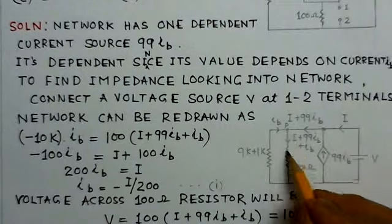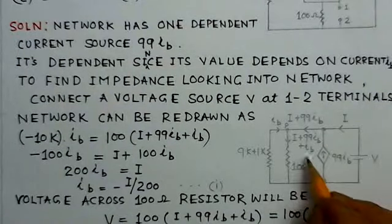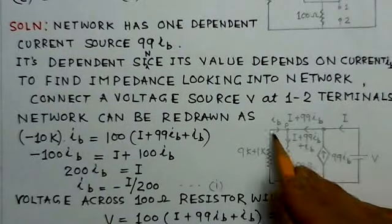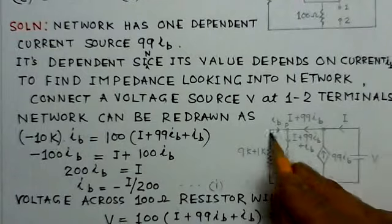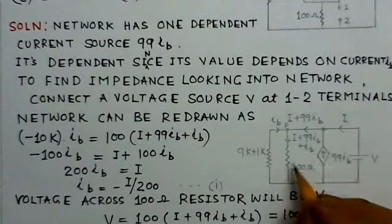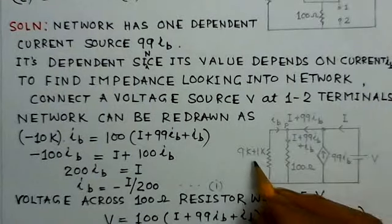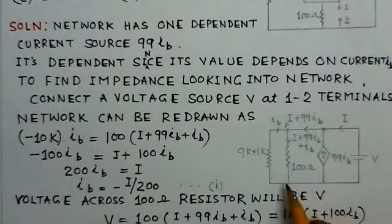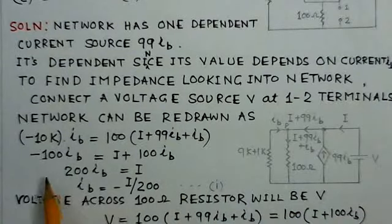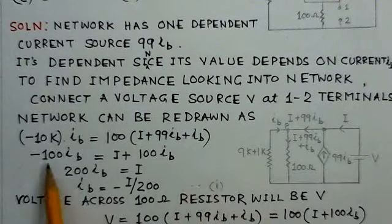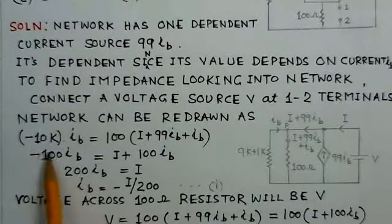If you see the current into the 100 ohm resistor, this current would be I plus 99 IB plus the current IB flowing on this side. So this would be the total current into the 100 ohm resistor, along with the 9K plus 9K plus 1 kilo ohm resistor. Now we can write the corresponding equations.